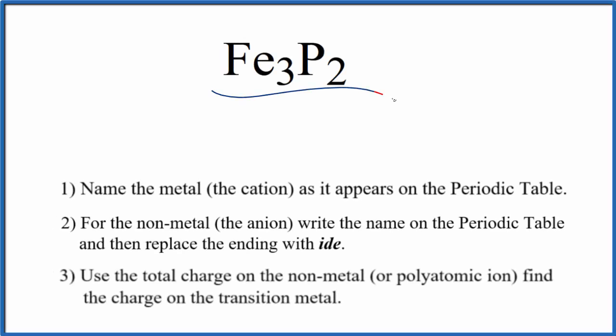To write the name for Fe3P2, we first need to recognize we have a transition metal here, and then we have a nonmetal. So we're going to use these rules here to write the name for Fe3P2.